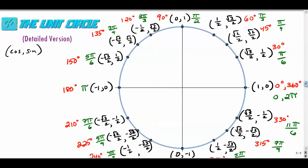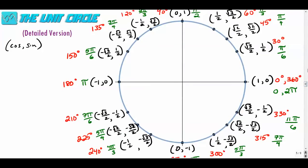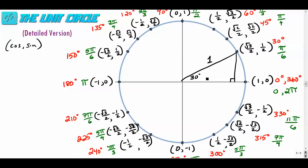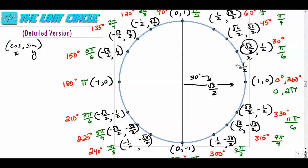As we look at the unit circle, for the sine of 30 degrees, think about this in terms of a right triangle with a hypotenuse of one. Sine is the y-value divided by the hypotenuse — opposite over hypotenuse — so the sine of 30 degrees is one half. The cosine of 30 degrees is the x-value, which is radical three over two.